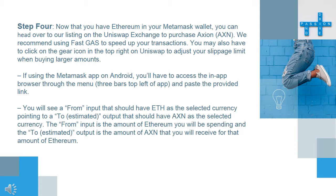You will see a 'From' input that should have ETH as the selected currency, pointing to an estimated output that should have AXN as the selected currency. The 'From' input is the amount of Ethereum you will be spending, and the estimated output is the amount of AXN that you will receive for that amount of Ethereum.